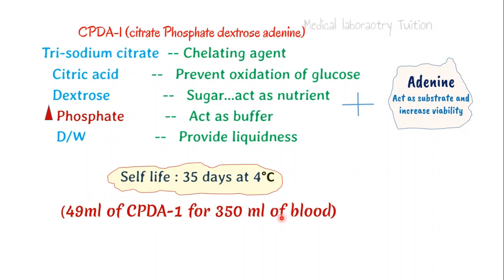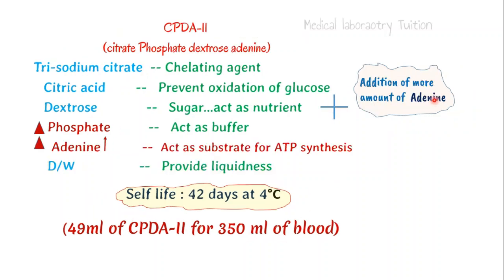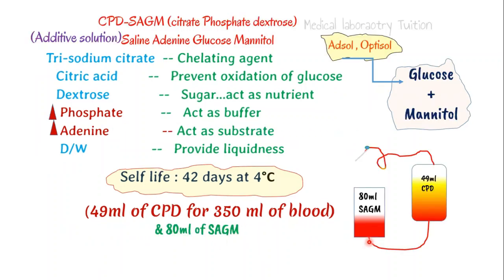Please remember: in CPD-A1 we add adenine. Similarly, in CPD-A2 all things are the same but with an increased amount of adenine. The addition of a greater amount of adenine makes it CPD-A2. This extra adenine increases RBC life to 42 days at 4°C. We similarly take 49 ml of CPD-A2 for 350 ml of blood.